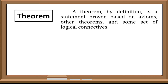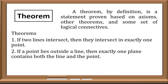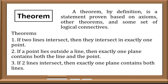Now let us have theorem. By definition, a theorem is a statement proven based on axioms, postulates, other theorems, and some set of logical connectives. This means that theorems are statements that are proved using different axioms, postulates, definitions, and other theorems with logical connectives. Here are examples of theorems: First, if two lines intersect, then they intersect in exactly one point. Second, if a point lies outside a line, then exactly one plane contains both the line and the point. And last, if two lines intersect, then exactly one plane contains both lines.